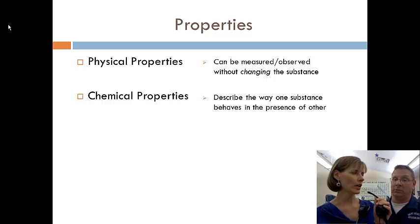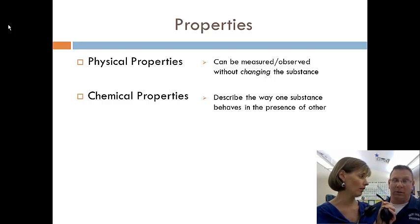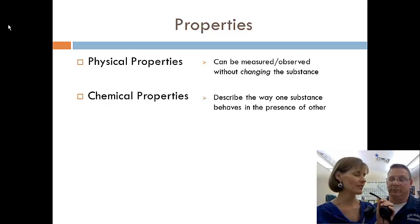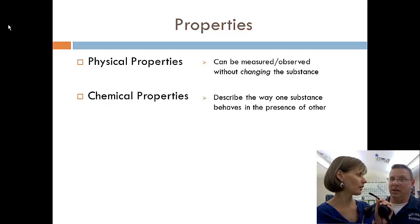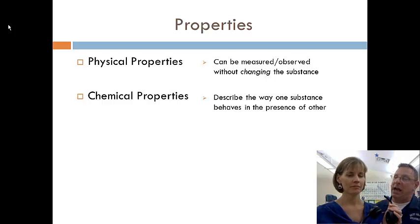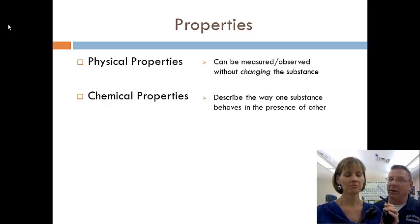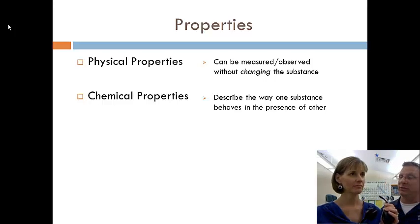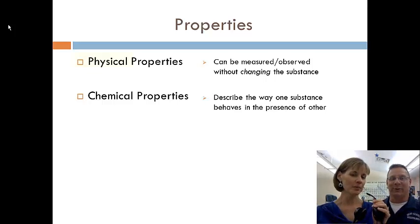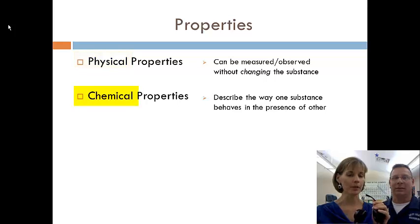So if the teacher's present in the classroom, usually the class behaves really well. But when the teacher walks out of the class, things get a little bit out of control. Is that a chemical property of the class? Yeah, that would be an analogy of a chemical property, the way substances behave in the presence of other substances. So let's look at some other examples of physical versus chemical properties.